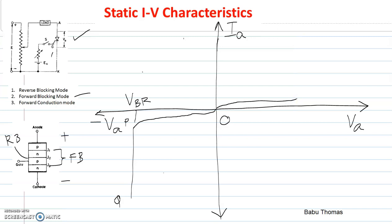This region is the forward blocking mode, where a small amount of leakage current is flowing through the system. During this forward blocking period, the device will not go into the conduction mode because junction J2 is in the reverse biased condition. The minority carriers are helping the leakage current to flow in the system.